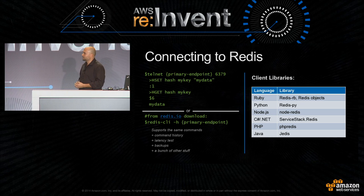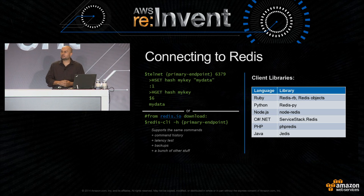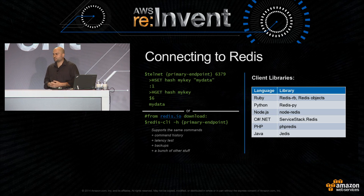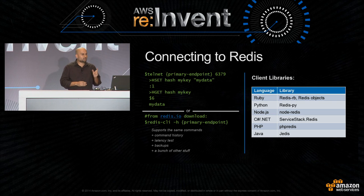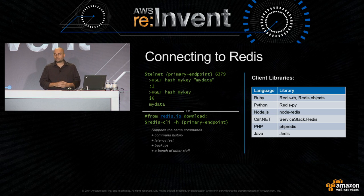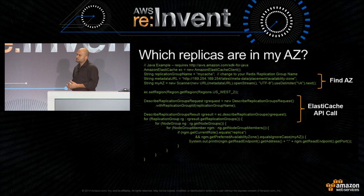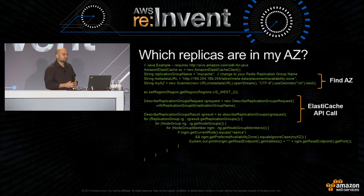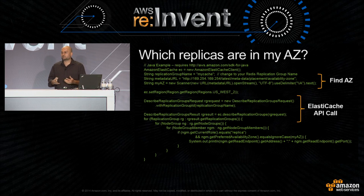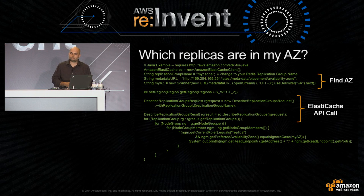Most of the time we're not going to use raw socket-level communication — we're going to incorporate client libraries. That's a sampling of the Redis client libraries that are available; there are more than that. A question that might come up: the primary endpoint gives you the master's DNS name for writes, but how do you know what read replicas are local to your AZ? We're a programmatic infrastructure. You can interrogate the local metadata to find what availability zone you're in, then interrogate our APIs to find which replicas in your replication group are local to your AZ. This is a Java example, but you can do this in any language.